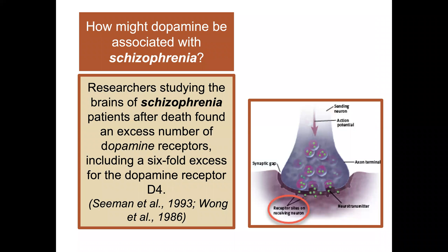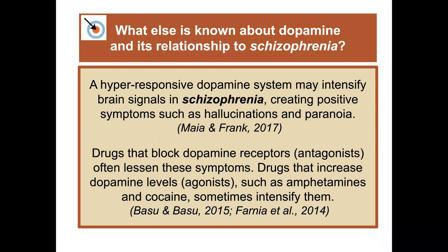How might dopamine be associated with schizophrenia? Researchers studying the brains of schizophrenia patients after death found an excess number of dopamine receptors, including a six-fold excess for the dopamine receptor D4. A hyper-responsive dopamine system may intensify brain signals in schizophrenia, creating positive symptoms such as hallucinations and paranoia. Drugs that block dopamine receptors, called antagonists, often lessen these symptoms, while drugs that increase dopamine levels, called agonists — such as amphetamines and cocaine — can sometimes intensify schizophrenia symptoms.